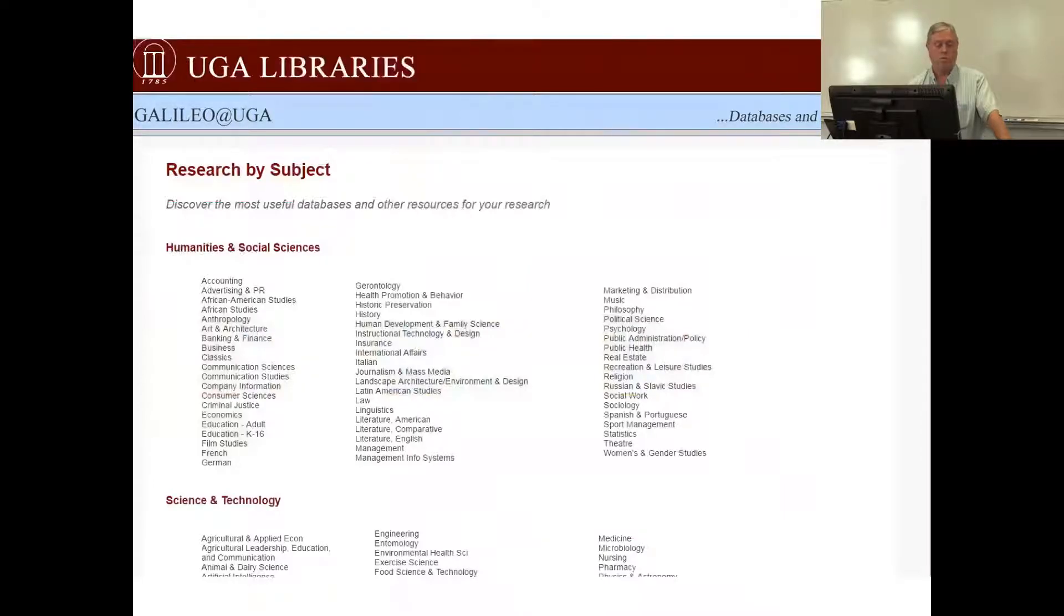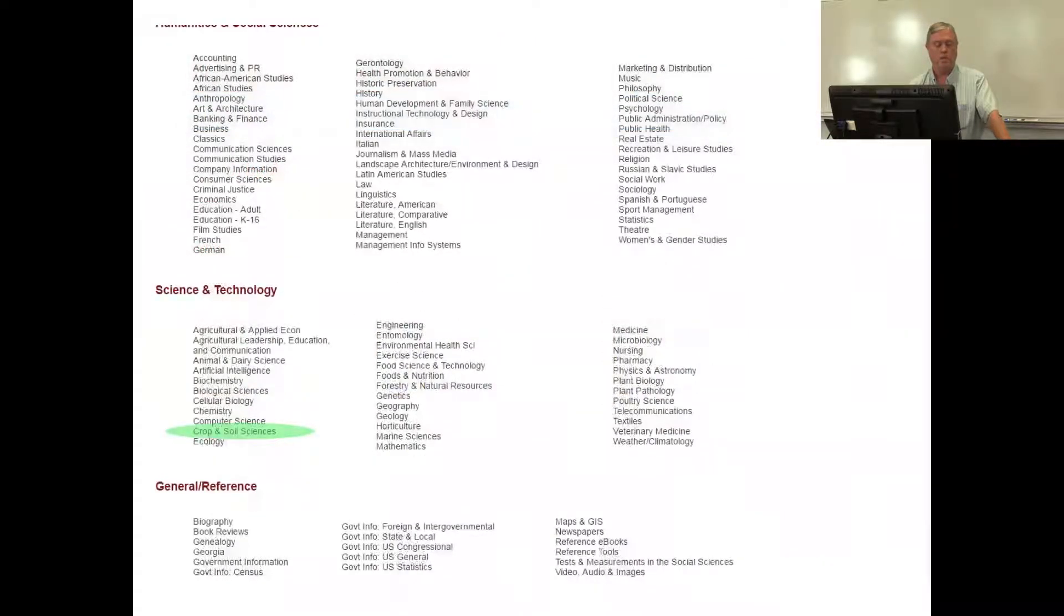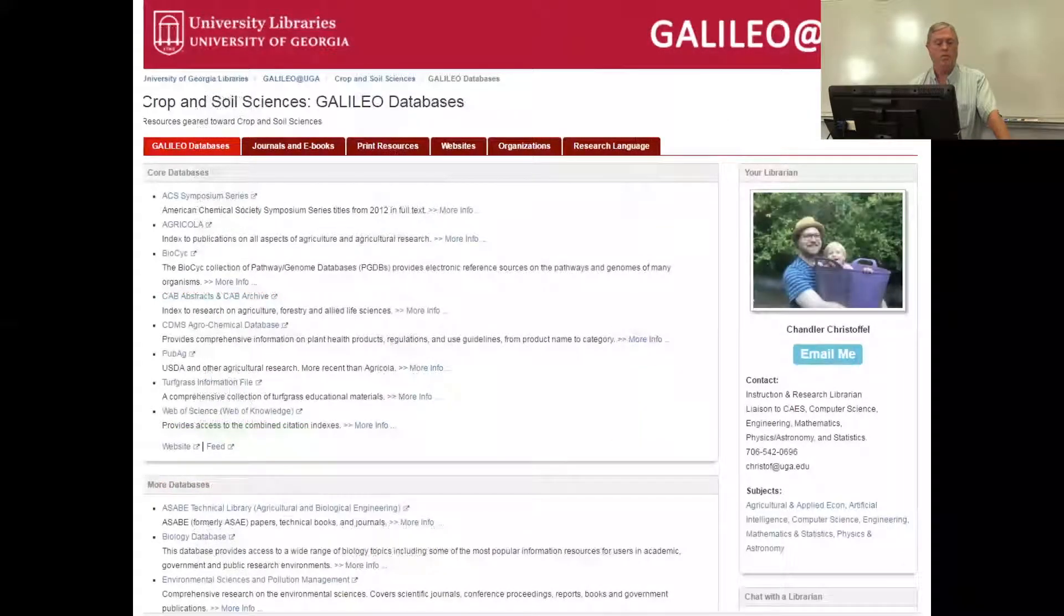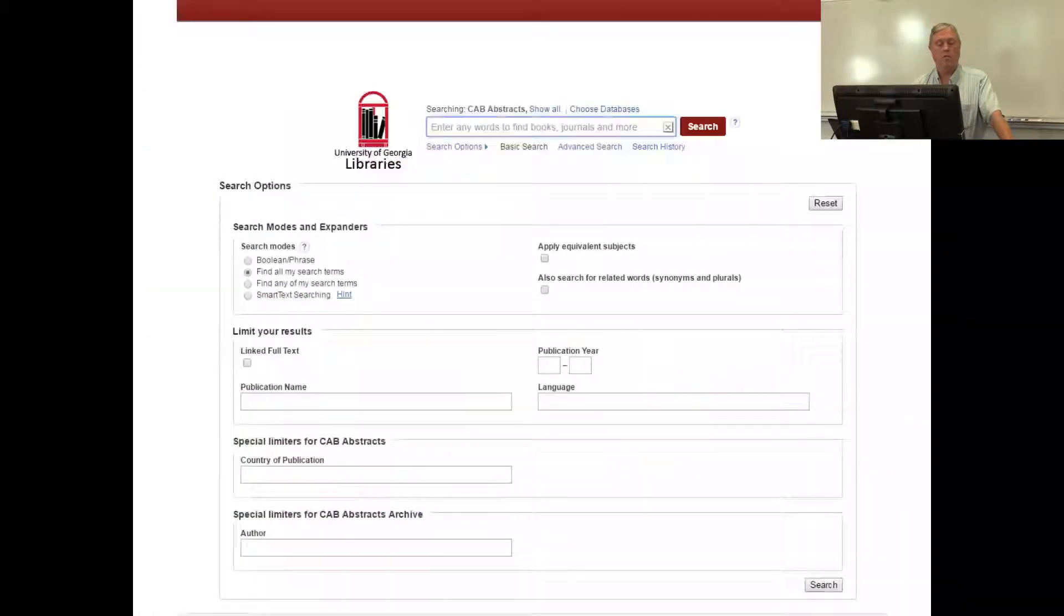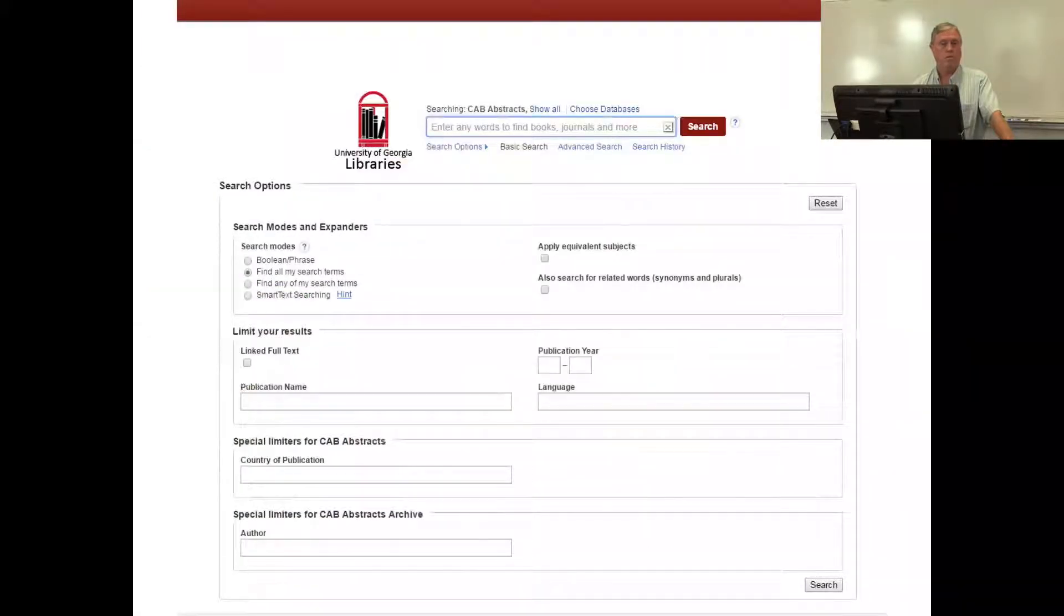So for example, if you want to do a search in the area of crop and soil sciences, you'll find that of course under science and technology. Go to that link, click on the link, and it'll give you a listing of all the relevant databases for that field. So if you pick for example, CAB Abstracts, probably the most heavily used database in that field, just click on that link and it'll take you to a page where you can start doing your searches.